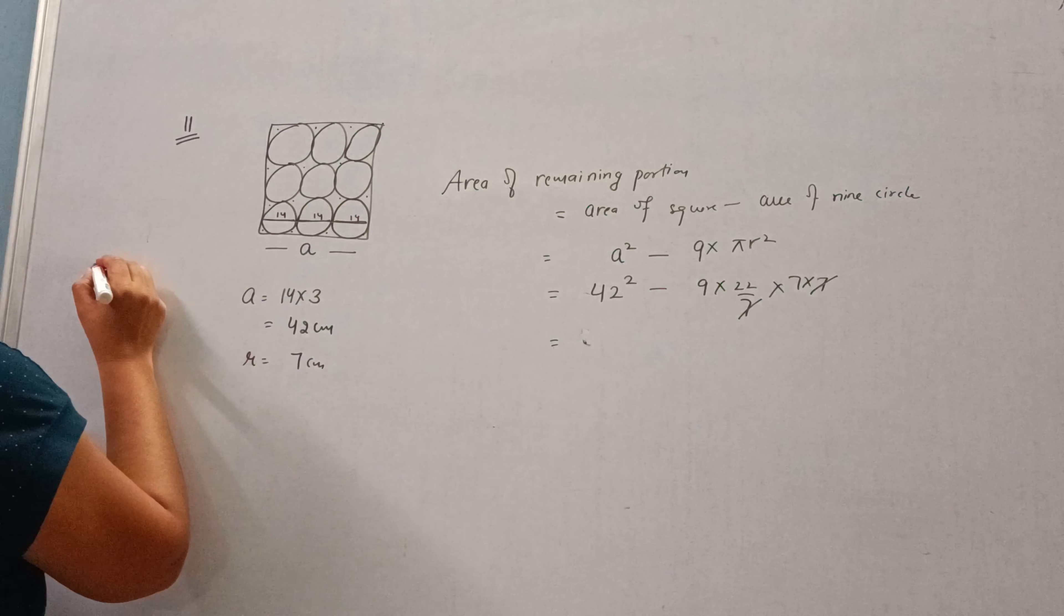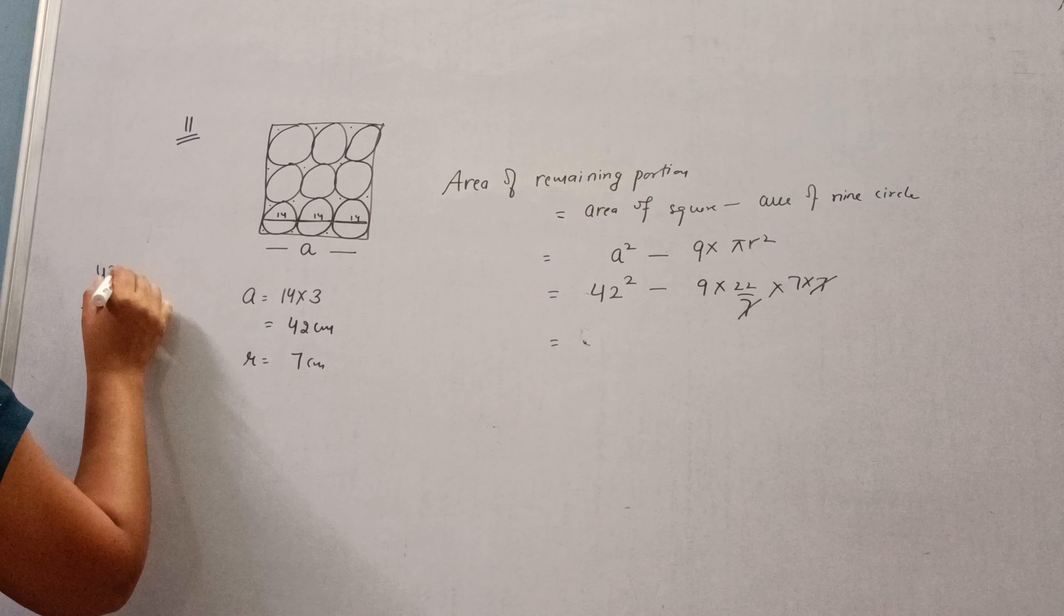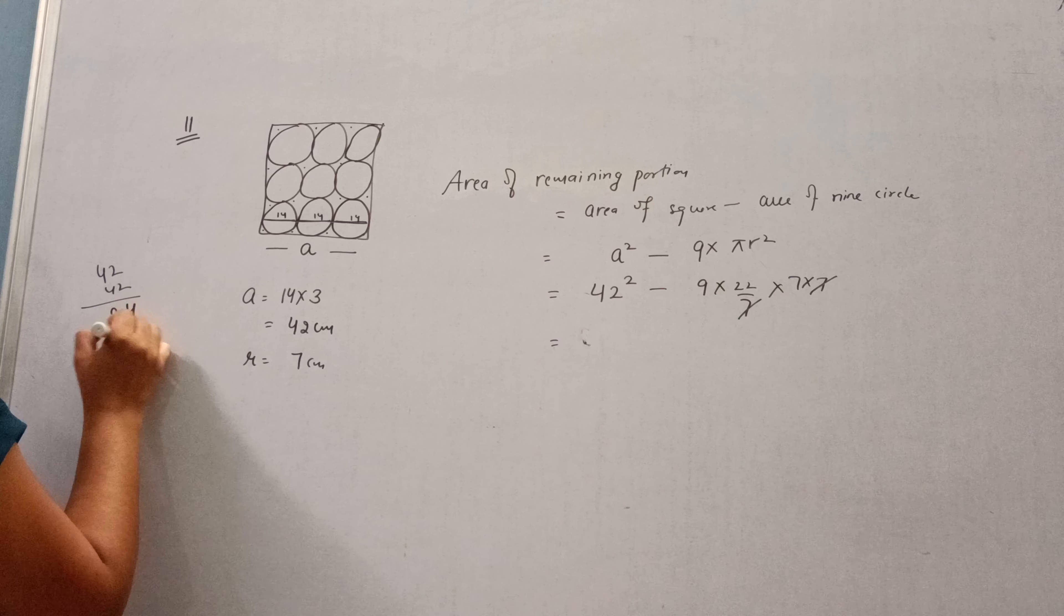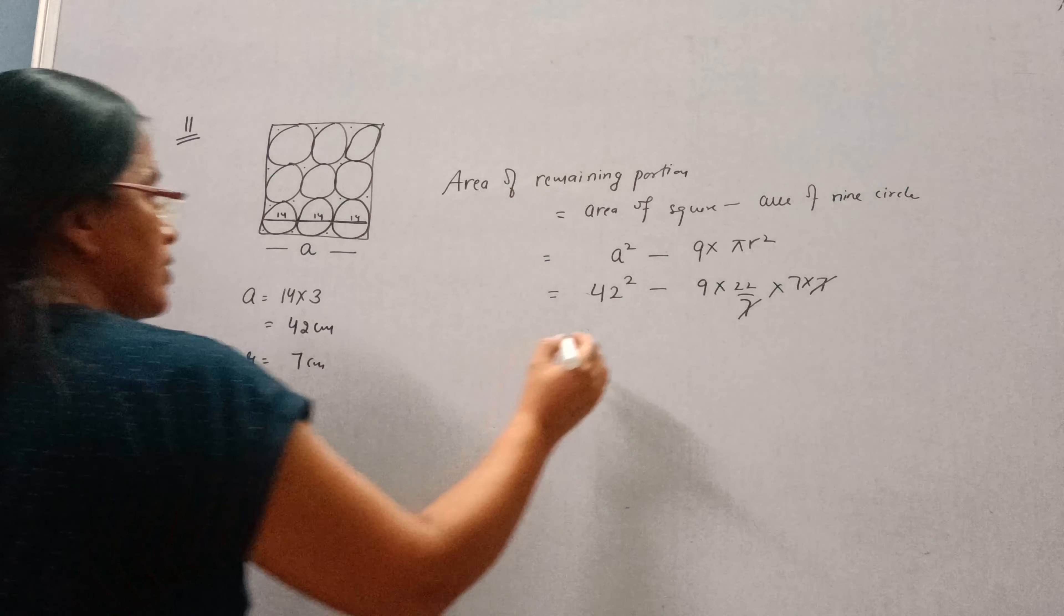Let's multiply it, 42 into 42 equals 1764.